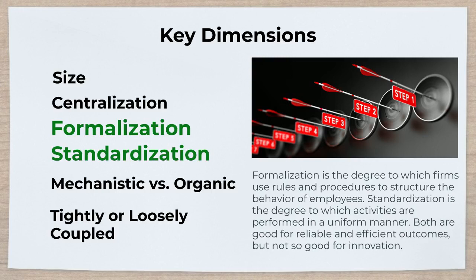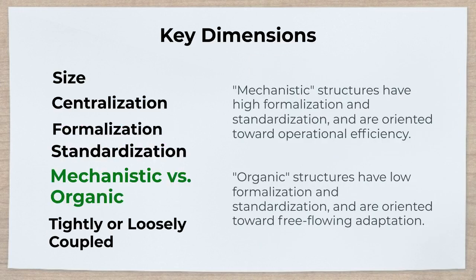Formalization is the degree to which firms use rules and procedures to structure the behavior of employees. Standardization is the degree to which activities are performed in a uniform manner. Both are good for reliable and efficient outcomes but not so good for innovation. Organizations with high formalization and standardization have a mechanistic structure, oriented toward operational efficiency. Those with low formalization and standardization have an organic structure, oriented toward free-flowing adaptation.